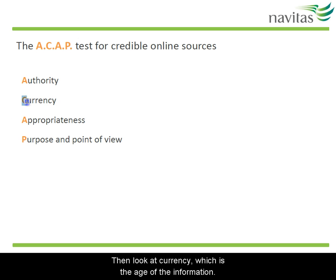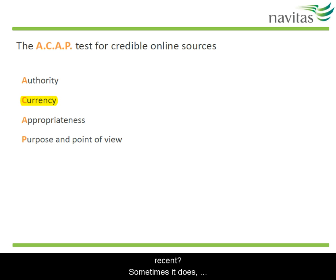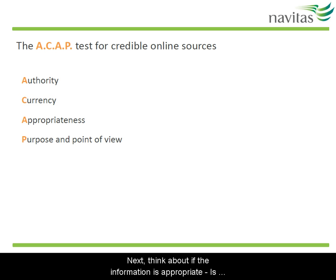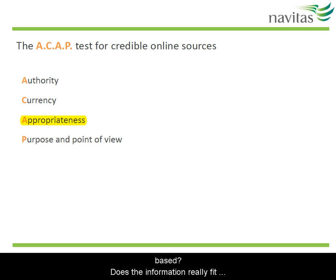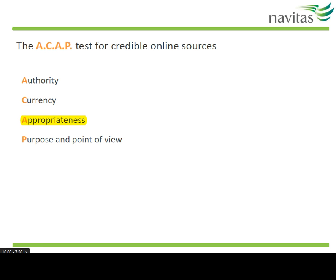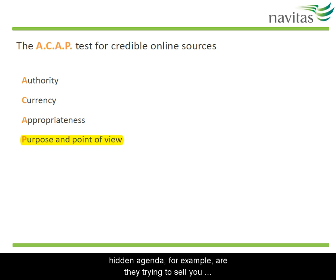Then look at the currency, which is the age of the information. Is it recent? Does it matter if it's not recent? Sometimes it does, sometimes it doesn't. Next, think about if the information is appropriate. Is the content just someone's opinion or is it research based? Does the information really fit your topic? Is the content biased or balanced? Lastly, look at the purpose and point of view of the author. Does the author have a hidden agenda, for example? Are they trying to sell you something or just get you to view an ad?